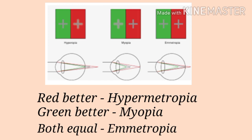If the patient says green is more clear than red, such a patient has myopia and needs minus lenses to treat the myopia. If the patient says both colors are equally sharp, clear, and bold, such a patient is emmetropic.